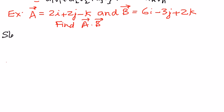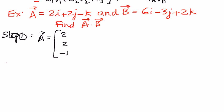Step number one: vector a can be written as a column matrix as 2, 2, negative 1. And vector b can be written as a column matrix as 6, negative 3, and 2.